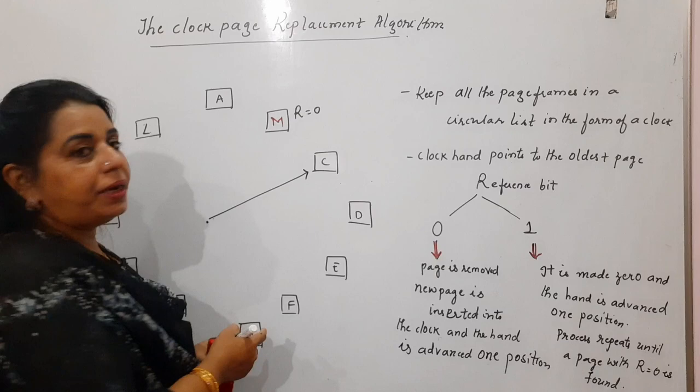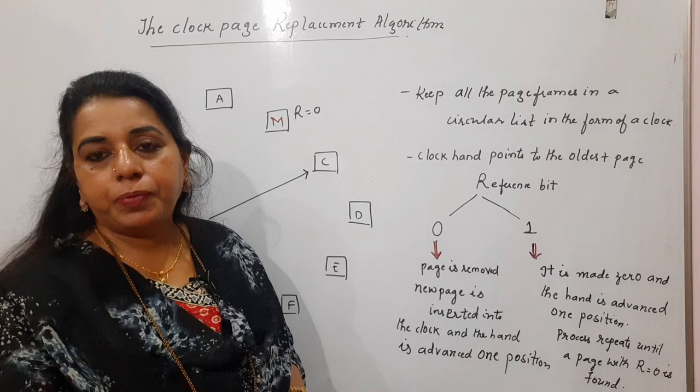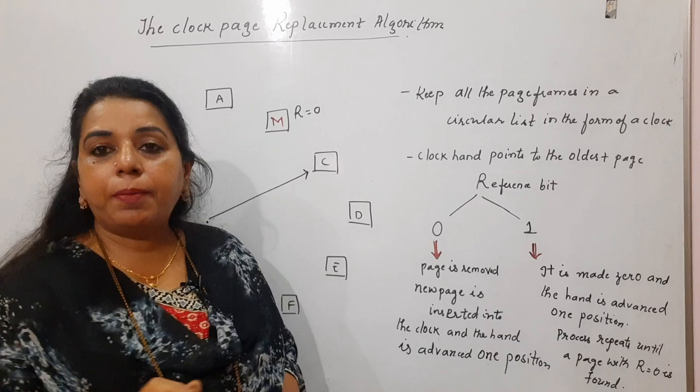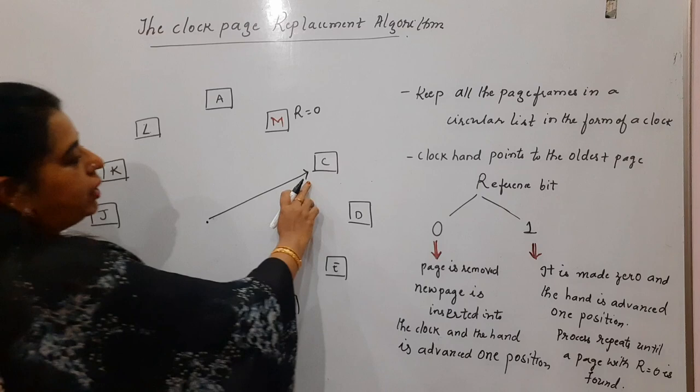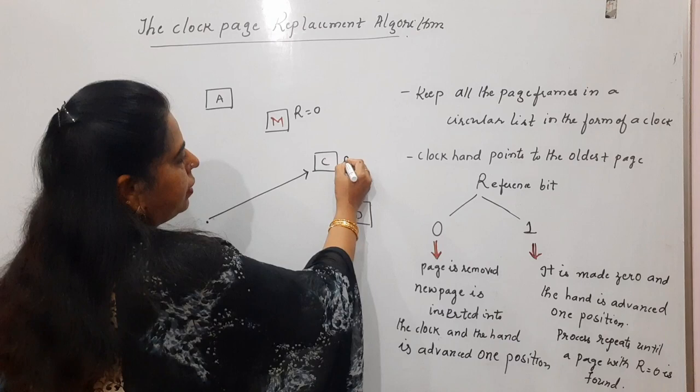Suppose the reference bit is one. In that case, it is set to zero, the hand is advanced one position, and the process is repeated until a page with R equal to zero is found.